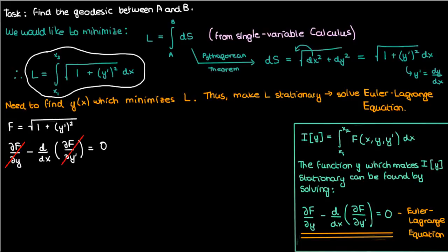In addition, partial capital F partial y prime is just y prime over the square root of 1 plus y squared if we use the chain rule. So the Euler-Lagrange equation here would just become the following.